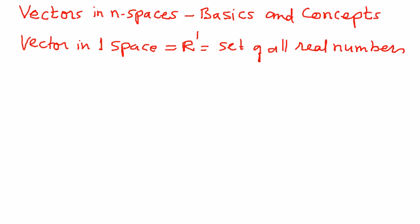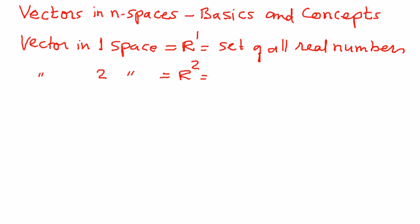A vector in two spaces is represented as R2. This is a set of all ordered pairs of real numbers. The ordered pairs could be (x1, x2).